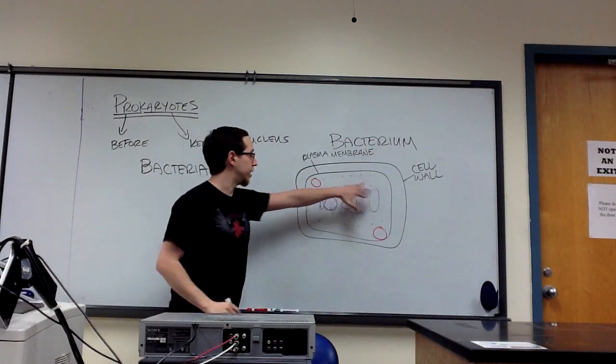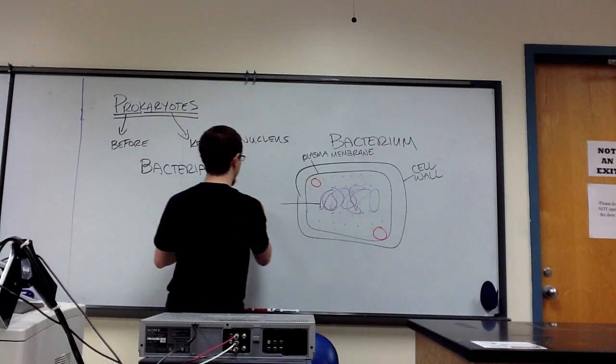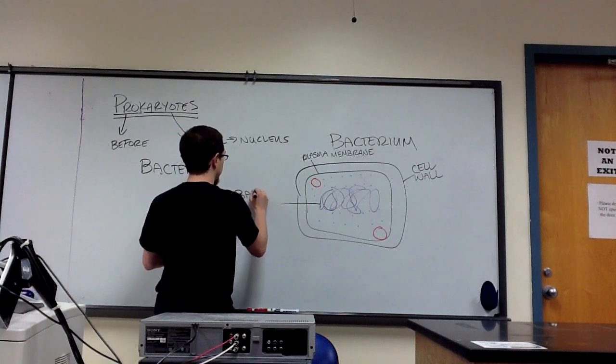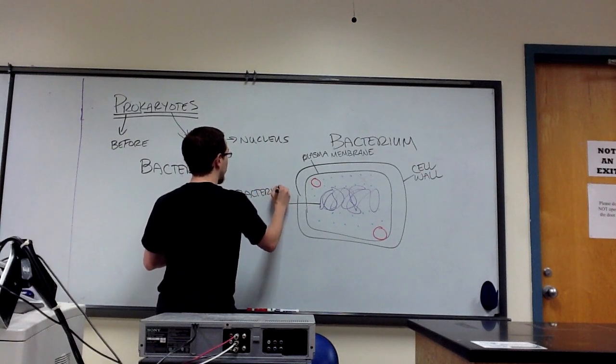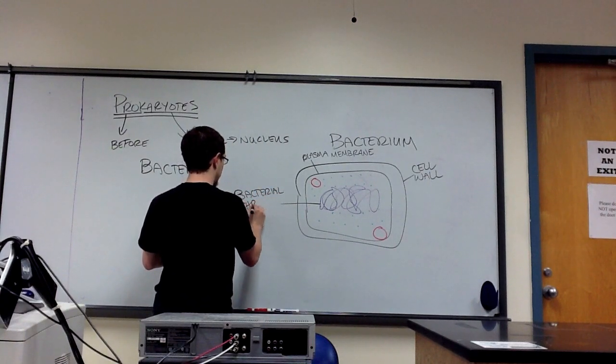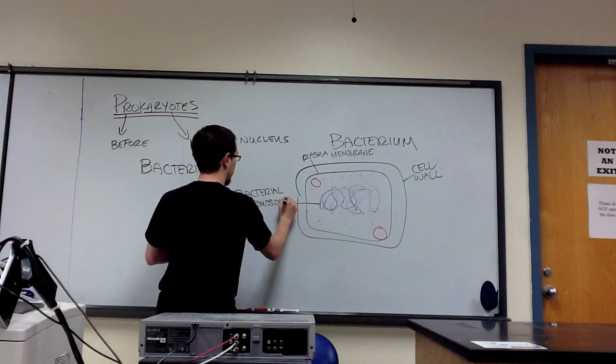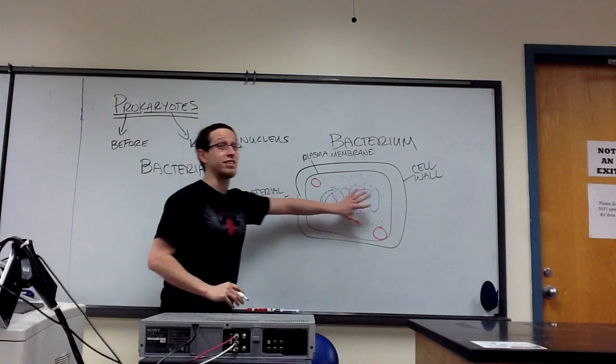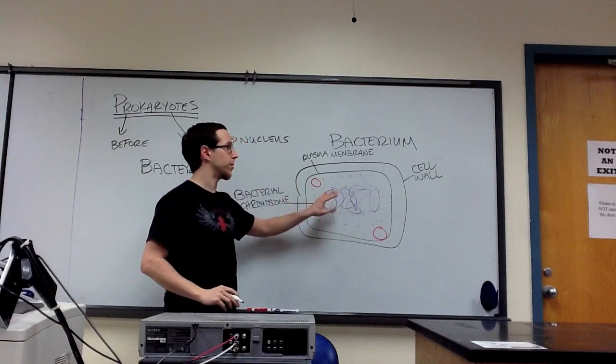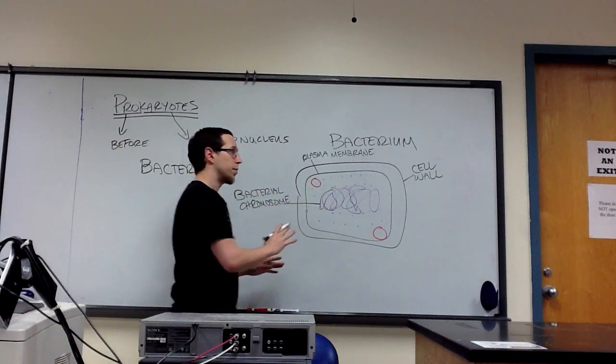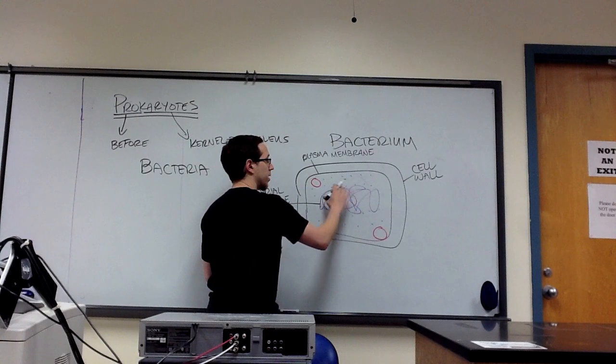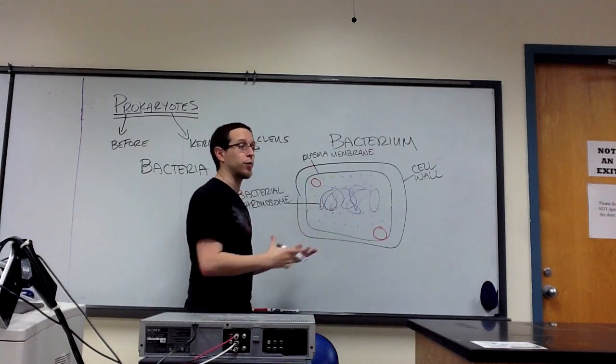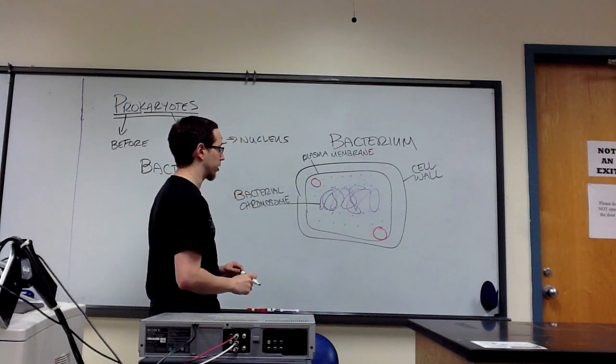This purple mass here is actually a bacterial chromosome. So that's all of the DNA. Notice it's not in a nucleus. It is simply kind of at the center of the cell. But there's nothing separating it from everything else inside the cell like we see in eukaryotic organisms.